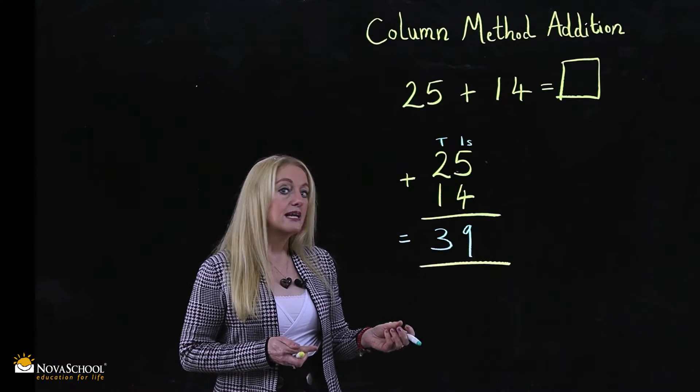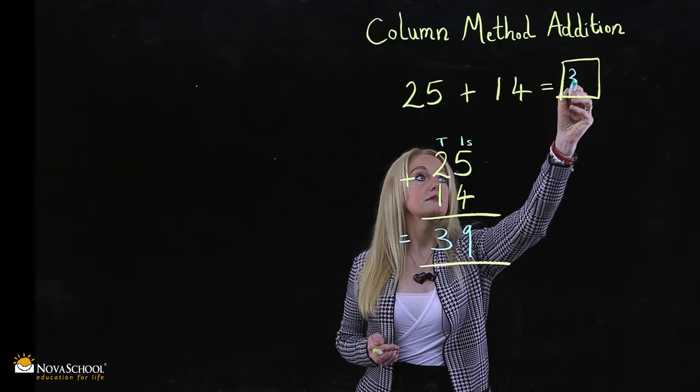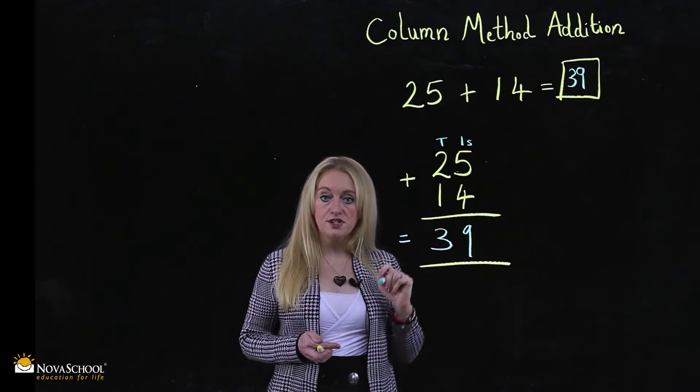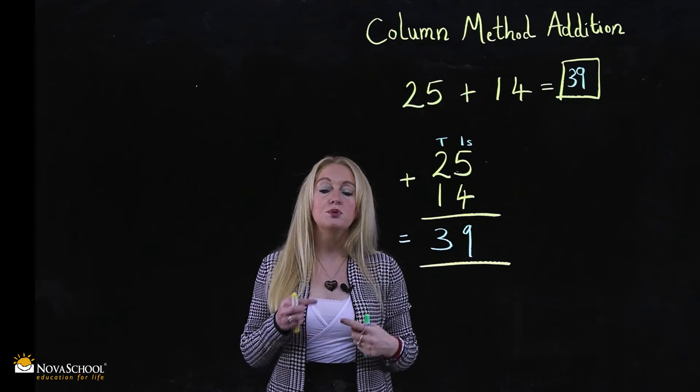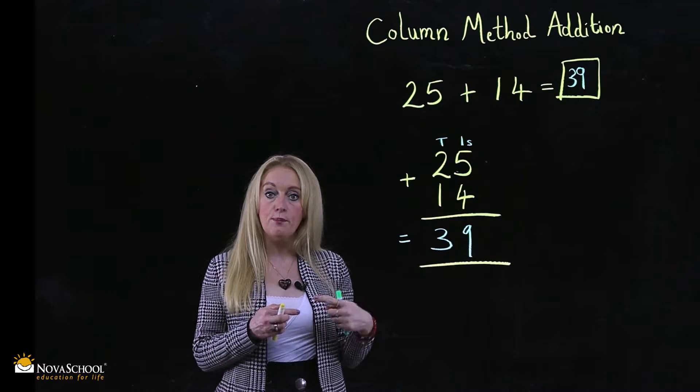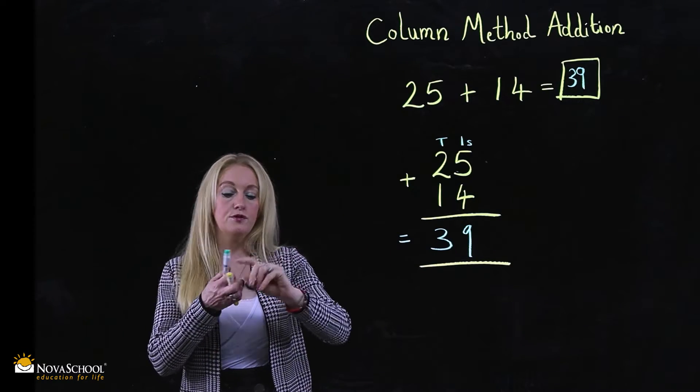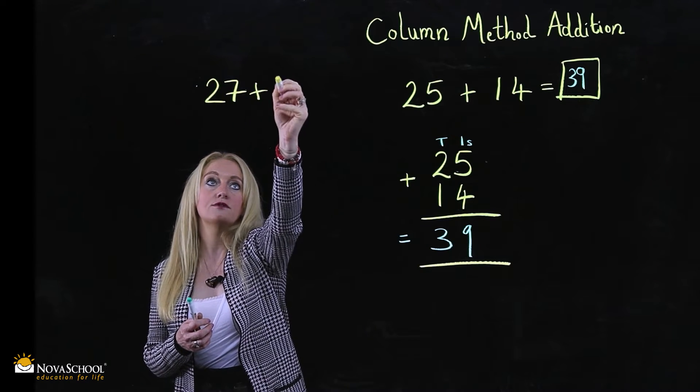Now if we wanted to do a question where the numbers cross over into the next 10, let me show you, which would then obviously help your child to progress into the next tens of numbers. So we're adding over 10. Let's have a look. So if we took, for example, 27 add 14.